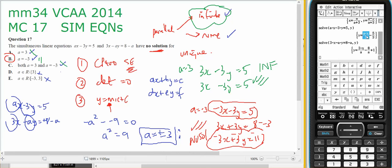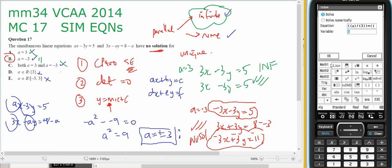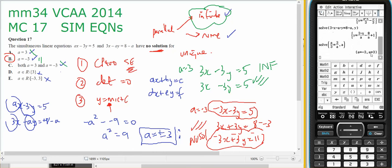Okay, so one of them has a gradient of a on 3. And if I set that equal to the other one, which has a gradient of 3 on a, and solve for a, I get my two answers of plus or minus 3.